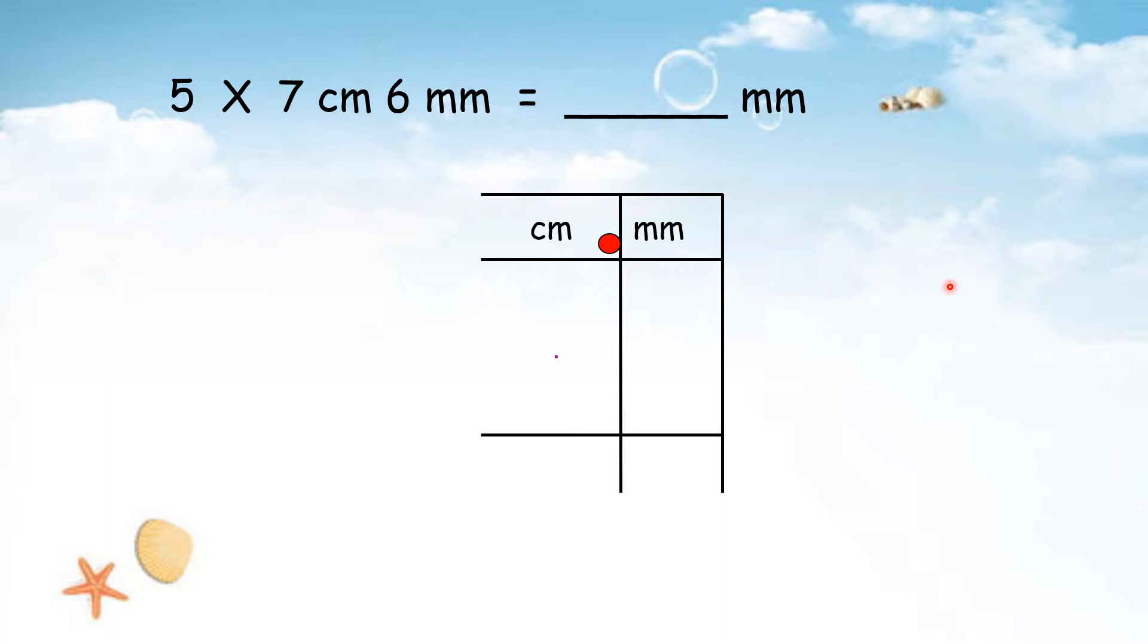Now we fill in the numbers in the 1-1 box. We start from the number with units. 7 cm 6 mm, so we write 7 cm and 6 mm.